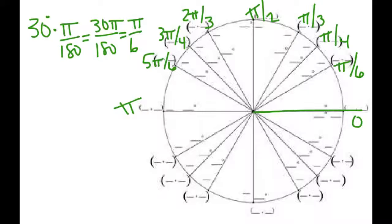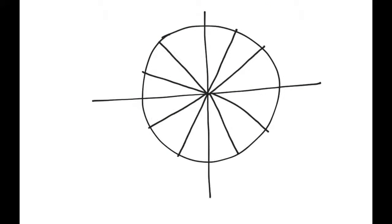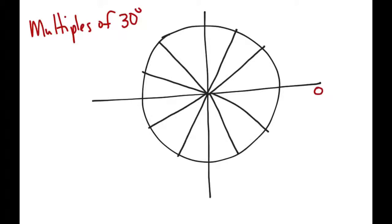I'm going to give you another way of looking at this unit circle in terms of radians. Radians are the angle measurements we must memorize because calculus is only done in radian measure. Let's start by talking about our multiples of 30. We always start at 0. If I go counterclockwise, the first angle is going to be 1 pi over 6. Another 30 degrees would be 2 pi over 6, which reduces to pi over 3.